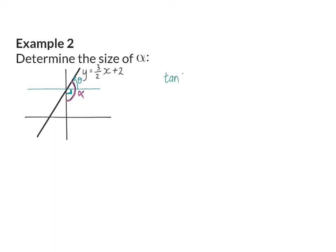So I'm going to start my calculation by determining the angle of inclination. The gradient here was given as 3 over 2. And shift tan of 3 over 2 will then give me an inclination angle of 56.31 degrees.